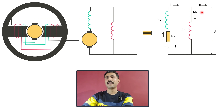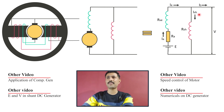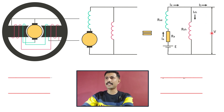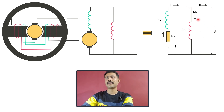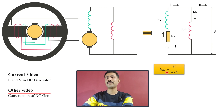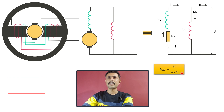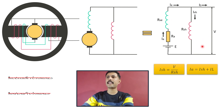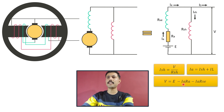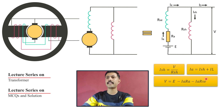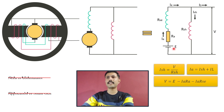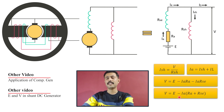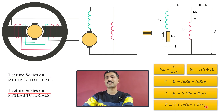IL current can be directly measured using an ammeter. ISH current can be found using the equation V divided by RSH, since the terminal voltage V appears across the shunt field winding terminals. So ISH = V / RSH. If we know IL and ISH, we can write IA = ISH + IL. Applying KVL in the loop: V = E − IA·RA − IA·RSE. Since IA is common in both resistance terms, we can factor it: V = E − IA(RA + RSE).